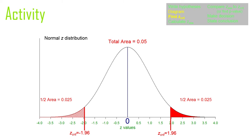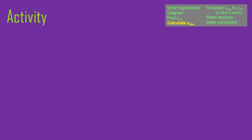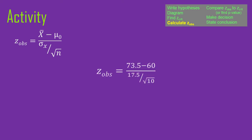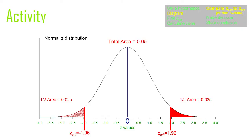Now we have our diagram set up and we've added our z-critical values. This is all z-scores on the diagram. Sometimes I like to make a row of raw scores I know and a row of z-scores I know and just fill in as I go along. Now we calculate z-observed, which is not terribly difficult. The formula for z-observed is just our sample mean minus the mean of the null hypothesis, over the standard error. In this case, it's 73.5 minus the null hypothesis mean, divided by the standard error — the original standard deviation divided by the square root of n. So our z-observed is 2.44.